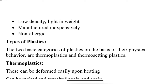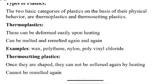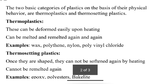There are two types of plastics based on physical behavior — how they respond to temperature, pressure, and other conditions: thermoplastics and thermosetting plastics. Thermoplastics can be melted and reused again and again. On heating they deform and can be remelted. Examples include polythene, nylon, polyvinyl chloride, and wax.